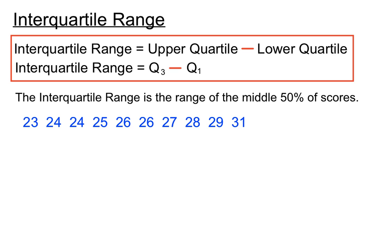I've got a bunch of scores here, from 23 up to 31. The way we find the interquartile range, firstly, is to identify the median. You can see that if we put that red line there, that's the middle of the scores. The median is going to be 26, the average of those two middle scores. It chops the scores in half.